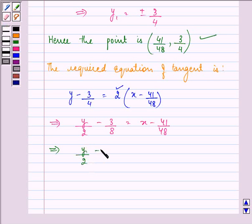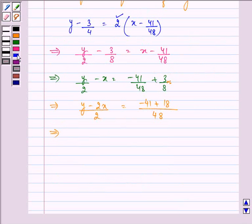y upon 2 minus x equal to minus 41 by 48 plus 3 by 8. That is y minus 2x upon 2 is equal to taking 48 as the LCM we have minus 41 plus 18. y minus 2x upon 2 equal to 41 minus 18 will give us 23, and since negative sign is with a greater number we will write minus 23 upon 48. Simplifying it now